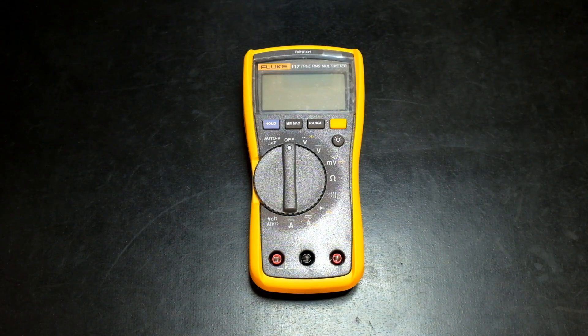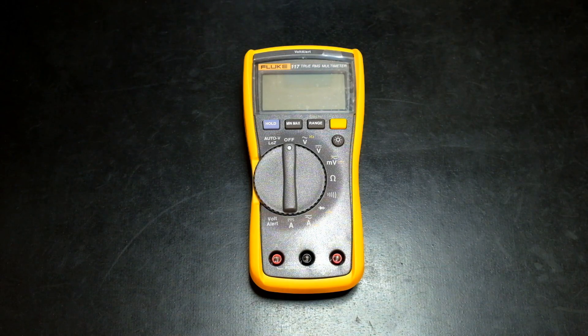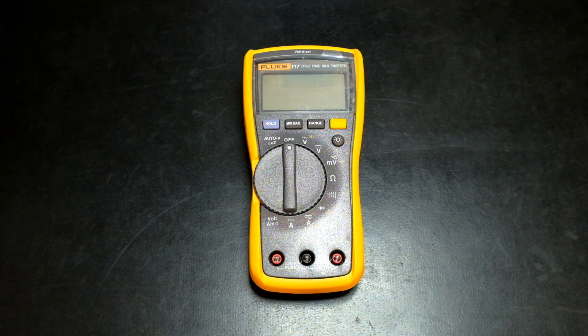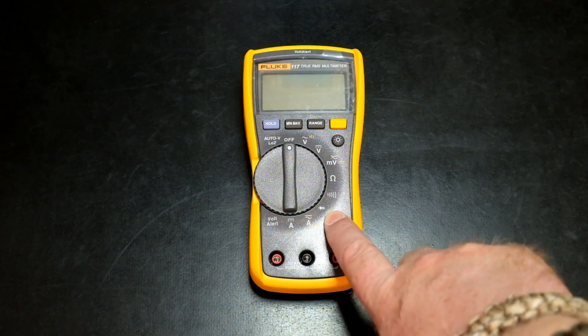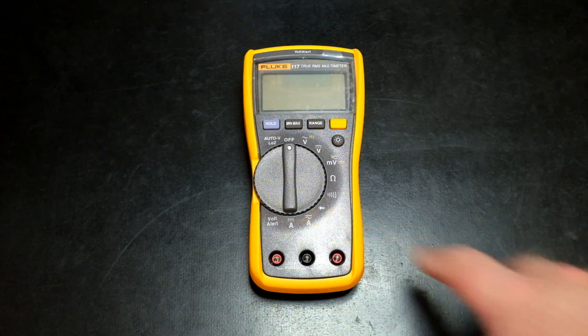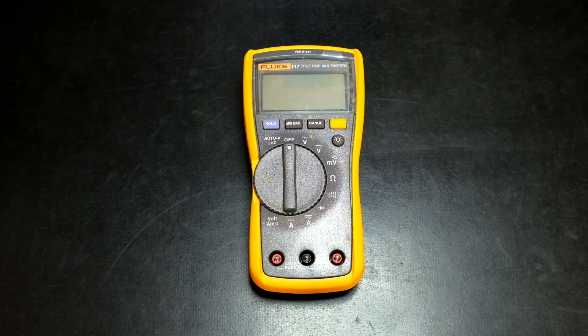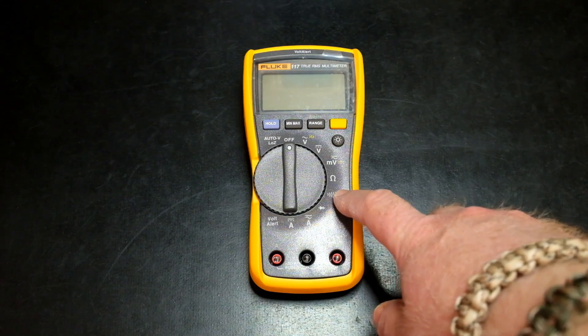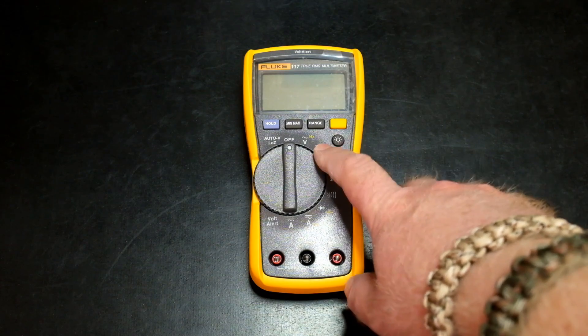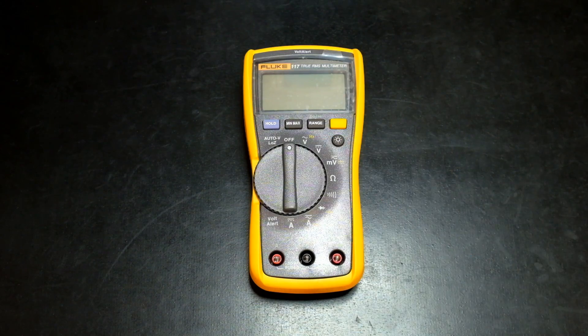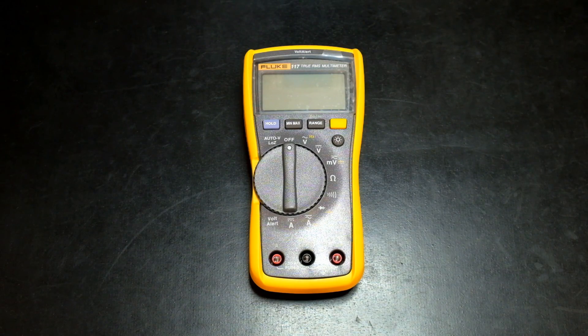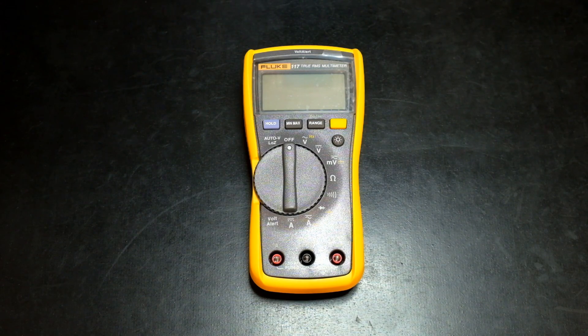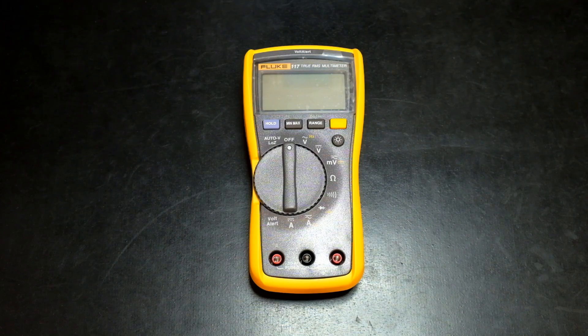So yeah you can get away with using a meter such as this Fluke 117 for electronics. My most common used parts of a multimeter would be the diode test used for testing transistors, MOSFETs, diodes, continuity, resistance, volts DC, volts AC. Those are pretty much my most used functions. So can the Fluke 117 be used as an electronics test meter? Of course it can.